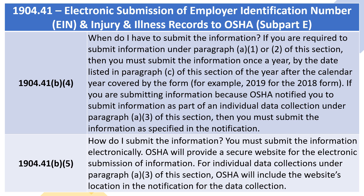1904.41(b)(4): When do I have to submit the information? If you are required to submit information under Paragraph A.1 or A.2 of this section, then you must submit the information once a year by the date listed in Paragraph C of this section of the year after the calendar year covered by the form — for example, 2019 for the 2018 form. If you are submitting information because OSHA notified you under Paragraph A.3, then you must submit the information as specified in the notification.